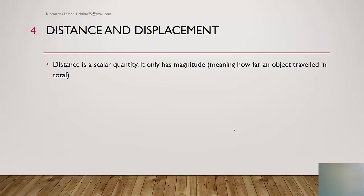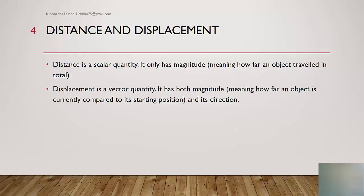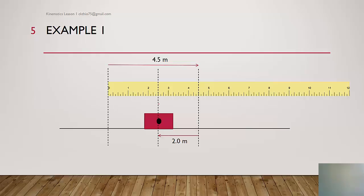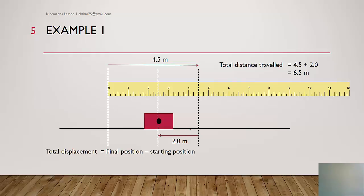Distance is a scalar quantity — it only has magnitude, meaning how far an object travels in total. Displacement is a vector quantity with both magnitude and direction; it compares how far an object currently is from its starting position. For example, if an object starts at zero, moves to 4.5 meters, then moves back 2 meters to 2.5 meters, the total distance is 6.5 meters. But the total displacement is 2.5 minus 0, which is 2.5 meters to the right.